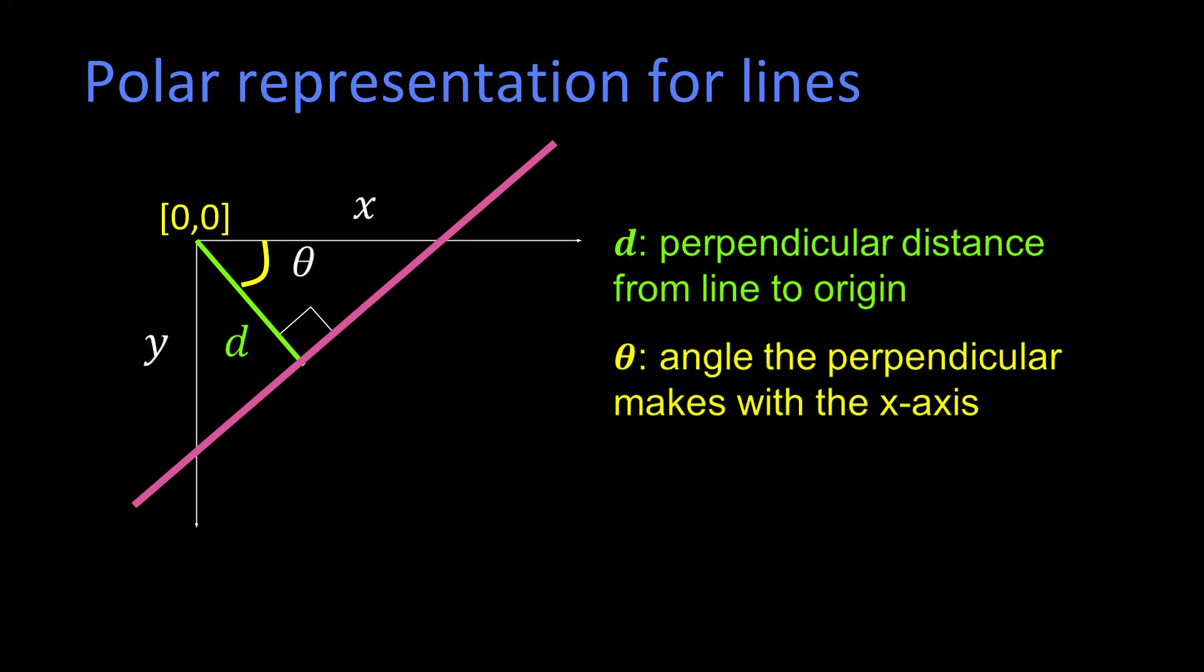In our polar representation, this purplish line is defined by two quantities. One of them is this distance d, the perpendicular distance from the line to the origin. It's the distance to the closest point on the line to the origin.